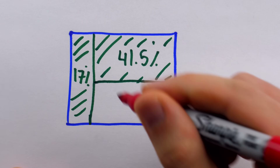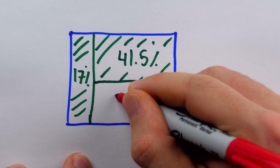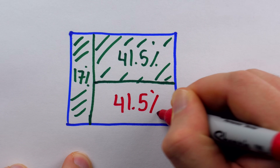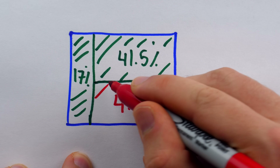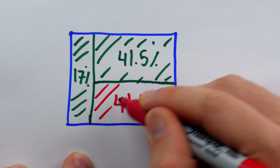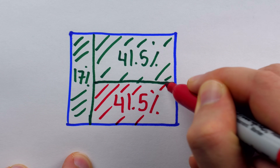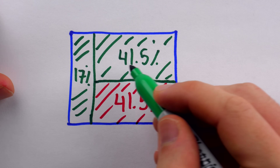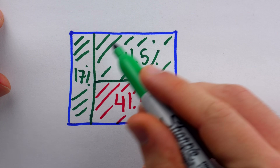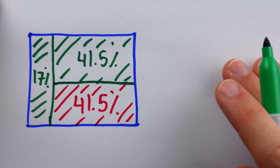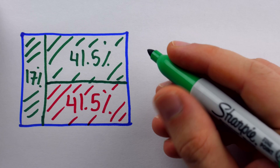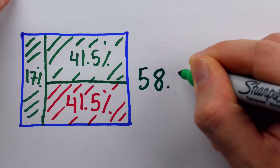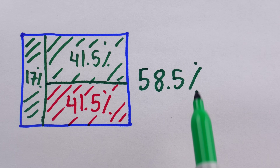That leaves another 41.5% where we, unfortunately, select the incorrect answer. Adding up the green area, for the first question there's a 58.5% chance we get it correct.